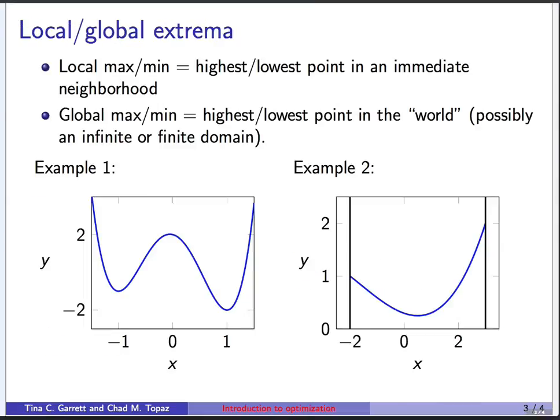Now I want to introduce the notion of local versus global extrema. A local max or minimum refers to the highest or lowest point in a small neighborhood, in an immediate neighborhood. Whereas a global max or min refers to the highest or lowest point in the world, where world means the domain over which the function we're thinking of is defined. And that could be infinite or finite. I'm going to give you two examples that encompass all of these terms we've just introduced.